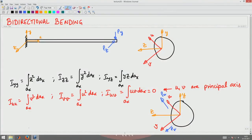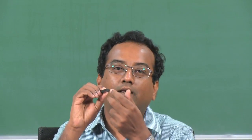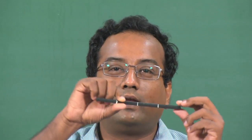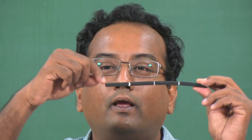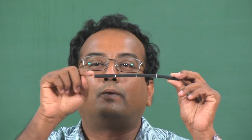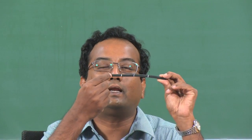In the last lecture we said we are interested in looking at a beam subjected to loads in two directions. In particular, we will analyze what happens when a beam is subjected to loading along its principal directions. For a rectangular cross section, the y and z axes parallel to the sides are principal axes. If I apply a load in one direction it bends one way, and if I apply a load perpendicular to that it bends the other way.